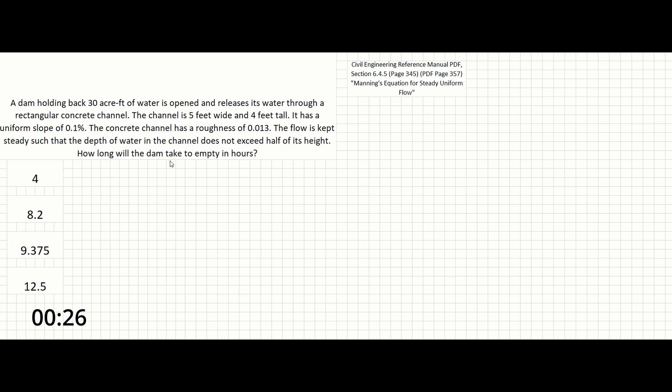How long will the dam take to empty in hours? So the first thing we're going to do is go to our reference manual and there we can find our equation for Manning's equation for steady uniform flow, since that's really what this problem's looking at for us to use. So that's going to be 1.49 over n times A times the hydraulic radius to the two-thirds times slope to the one-half.